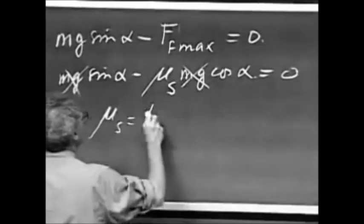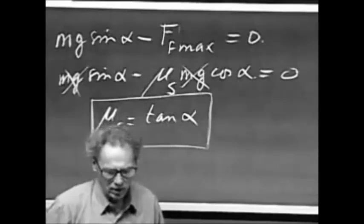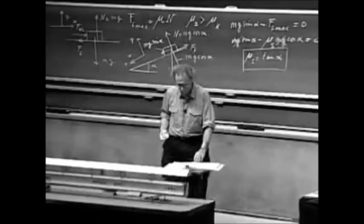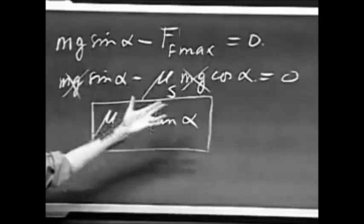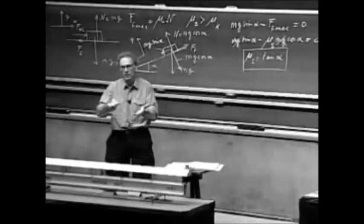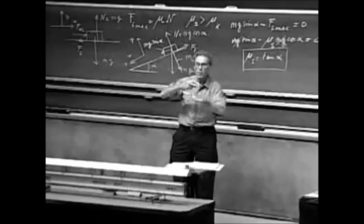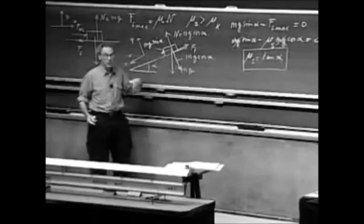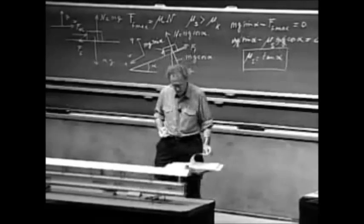Mu of s equals the tangent of alpha — that's easy to measure. You increase the tilt until it starts to slip, and at that critical angle, you have the value for mu of s, the static friction coefficient. It is very non-intuitive that this friction coefficient is completely independent of the mass — the mass has disappeared. If you double the mass, the angle would be the same. The friction coefficient only depends on the materials rubbing over each other. It's also independent of the surface area that is in contact with the incline, which is equally non-intuitive, but quite accurate within measurable uncertainties.